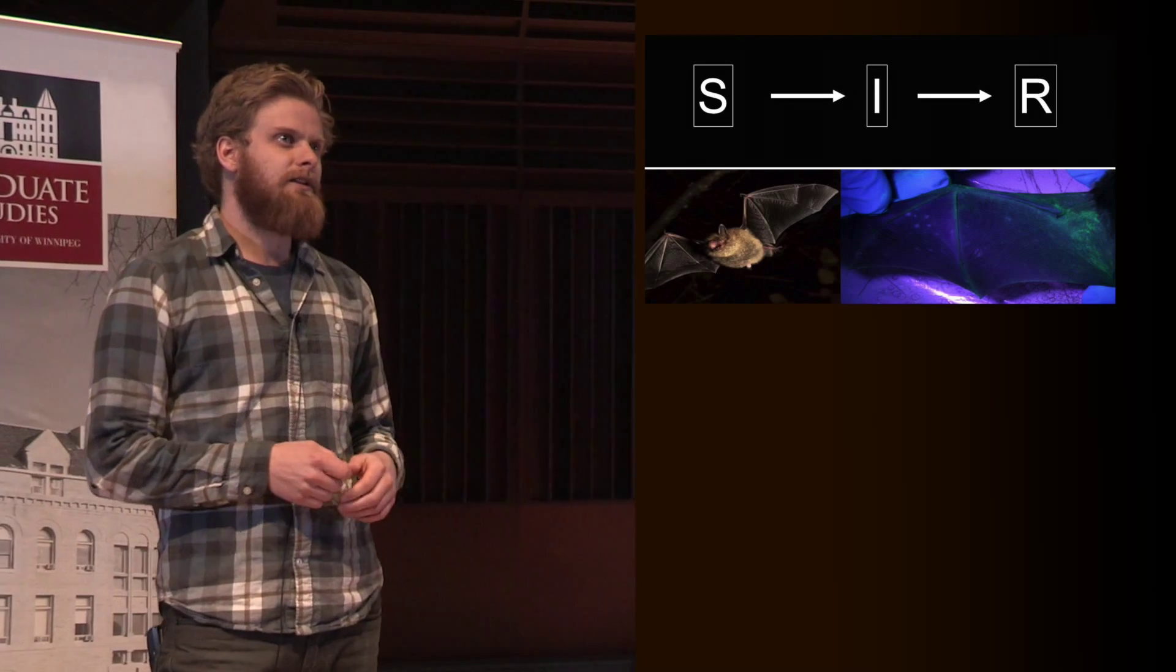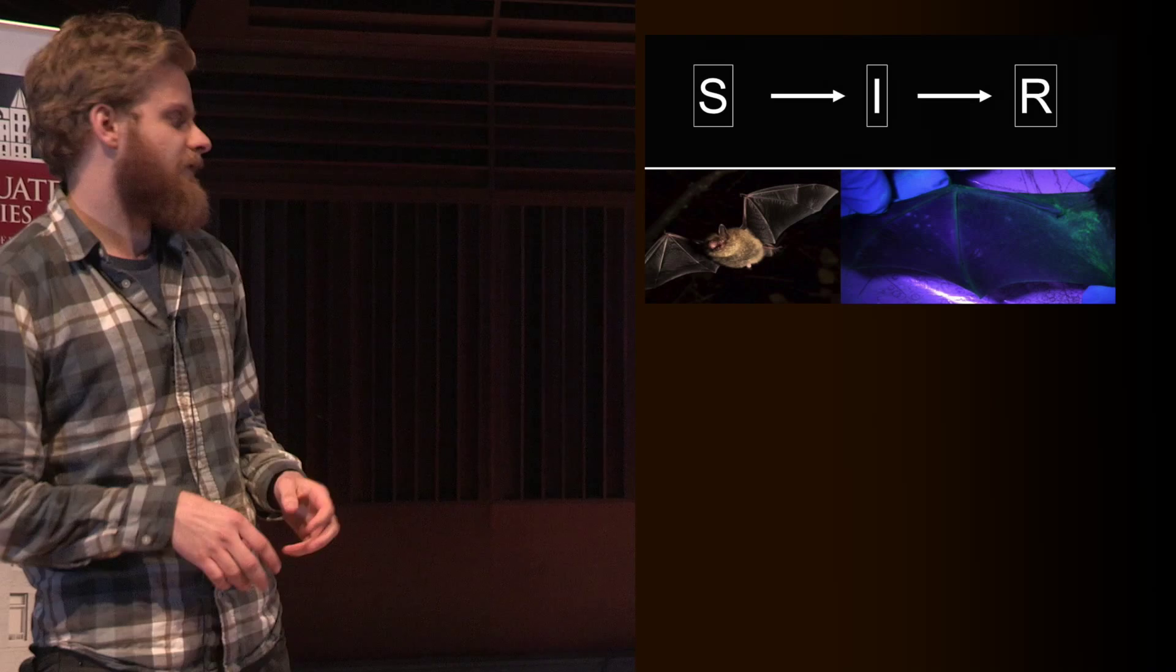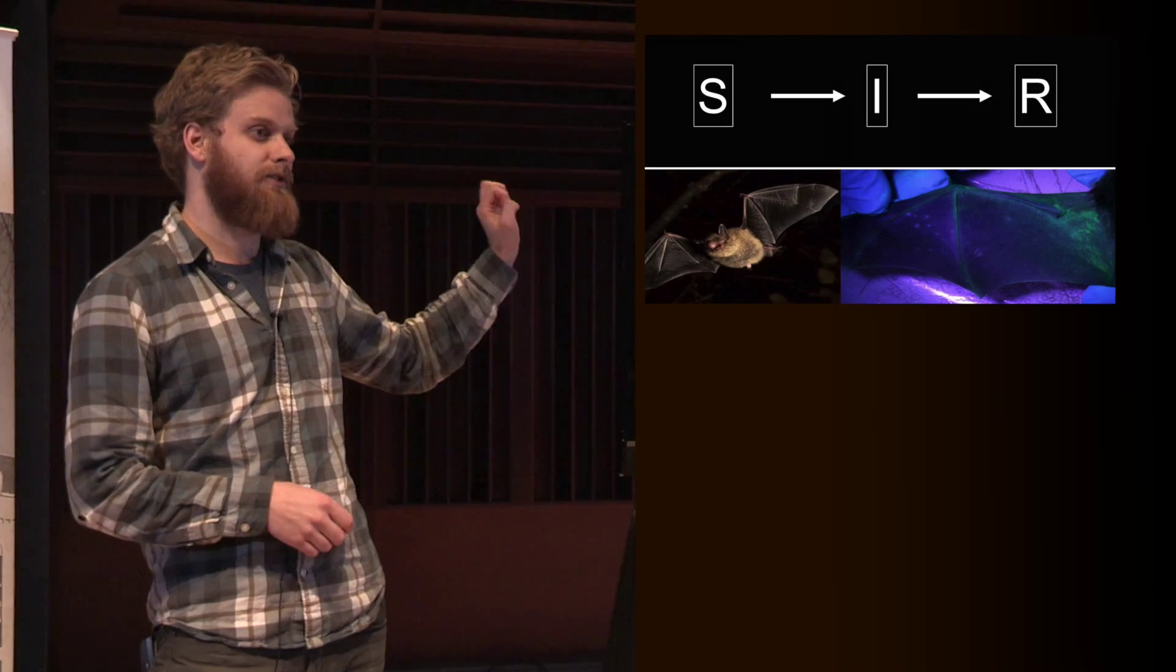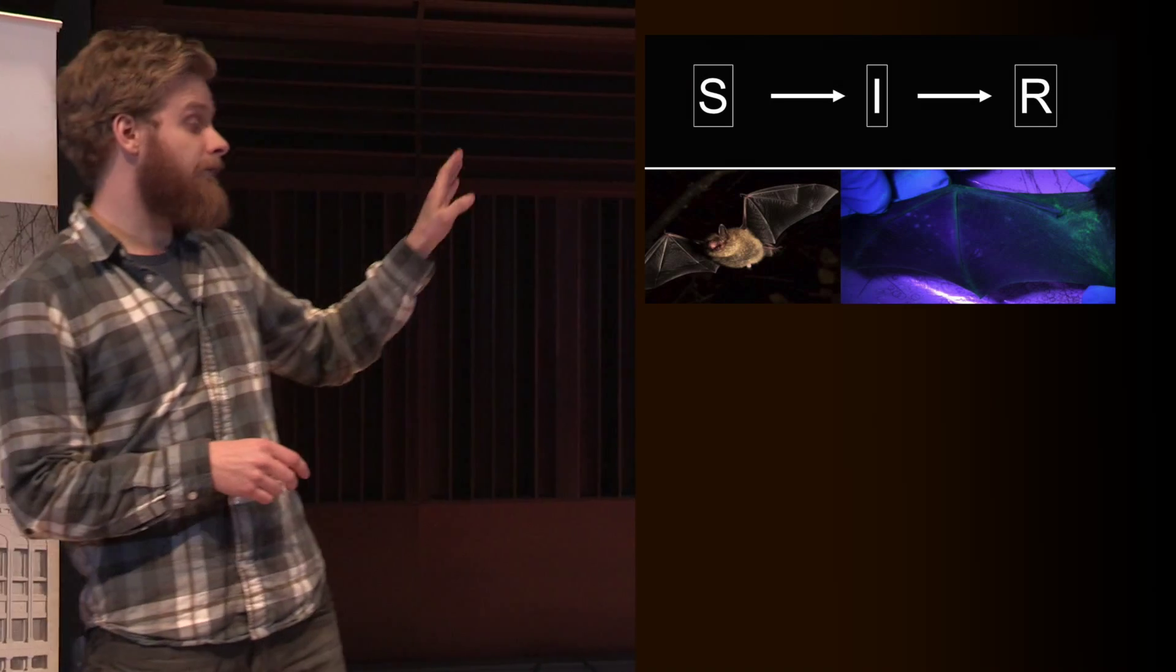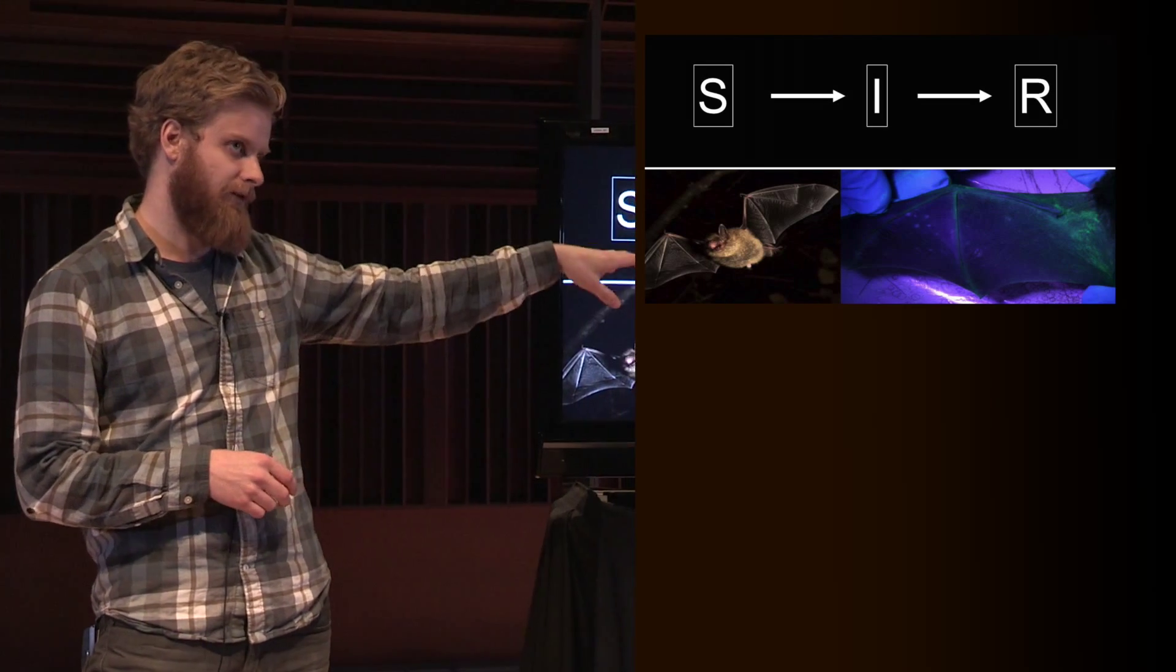So one of the most commonly used models to estimate pathogen dynamics is the SIR model, or the susceptible, infected, recovered model, which models the transition of individuals from being susceptible, to infected, to recovered.